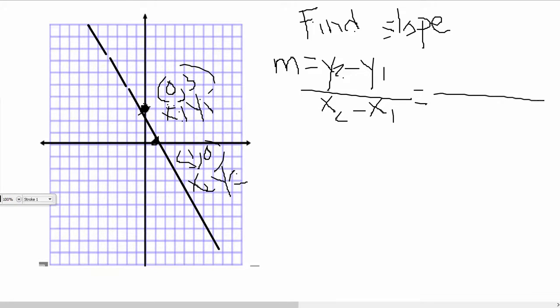Otherwise just plug and chug directly into the formula. So this formula starting in the numerator says y2 minus y1. So y2 is 0 minus y1 which is 3 over x2 minus x1. So x2 is 1 minus x1 which is 0. The next thing to do would be to simplify the subtraction.